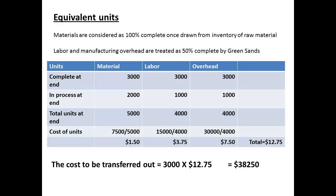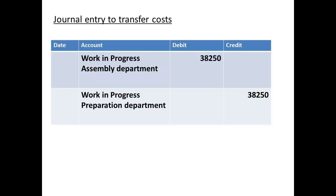Since we completed 3,000 units, the cost to be transferred out is 3,000 multiplied by $12.75, the cost of each unit. This gives a figure of $38,250 to be transferred out. The journal entry to transfer the costs for work completed from preparation to assembly and packaging: we debit assembly and packaging with $38,250 and credit preparation with $38,250.